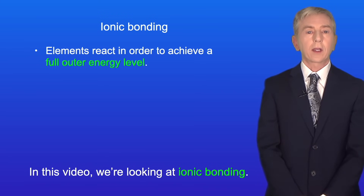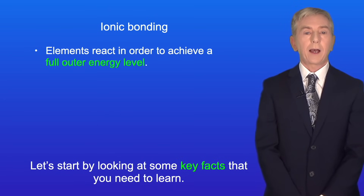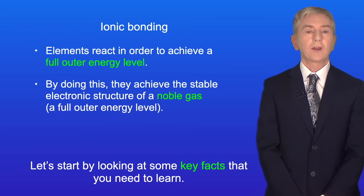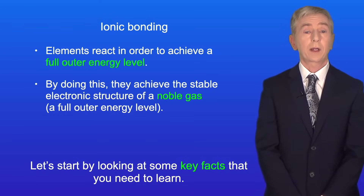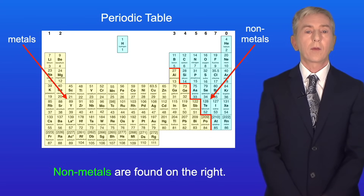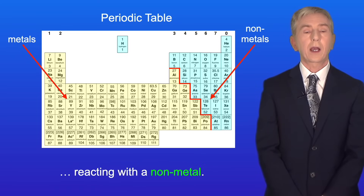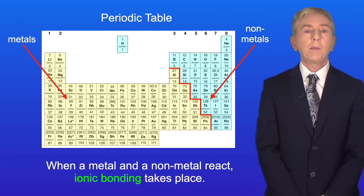In this video we're looking at ionic bonding. Let's start with some key facts to learn. Elements react in order to achieve a full outer energy level, and by doing this they achieve the stable electronic structure of a noble gas — in other words, a full outer energy level. Looking at the periodic table, metals are on the left-hand side and non-metals are on the right. When a metal and a non-metal react, ionic bonding takes place.